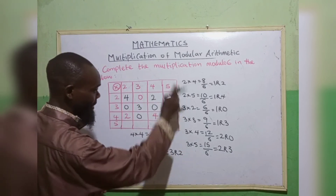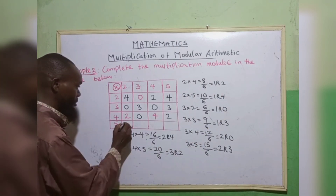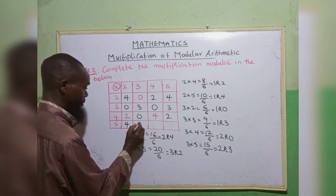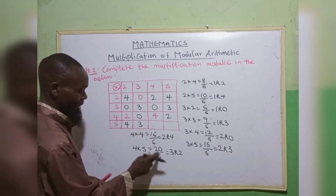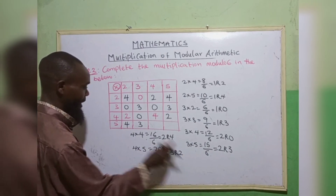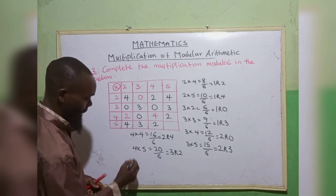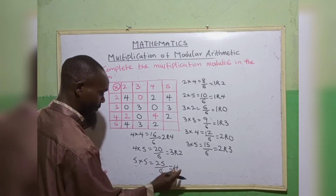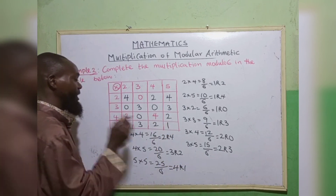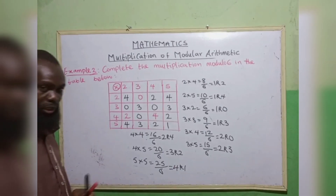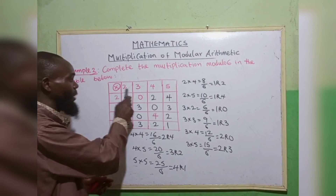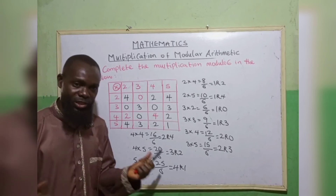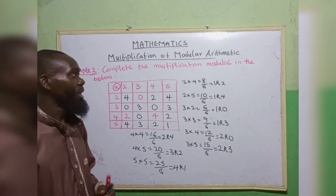Finally, row 5: 5 times 2 gives 10 — 6 goes in once, remainder 4. 5 times 3 gives 15 — 6 goes in twice, remainder 3. 5 times 4 gives 20 — 6 goes in 3 times, remainder 2. 5 times 5 gives 25 — 4 times 6 is 24, remainder 1. This is how to work out the multiplication table in modular arithmetic. If it is modulo 5, your numbers will be 1 less than your modulo.